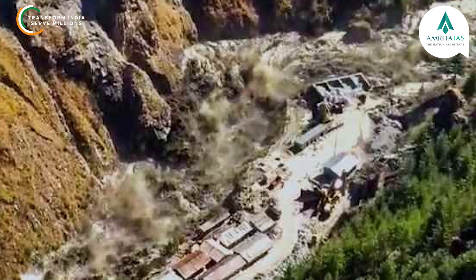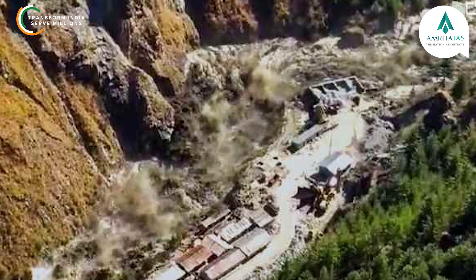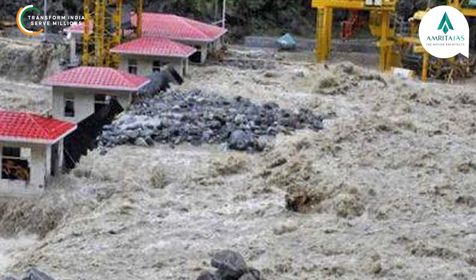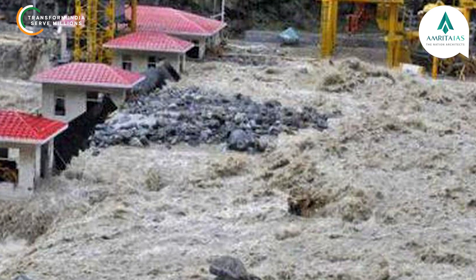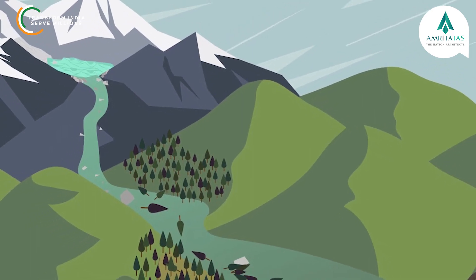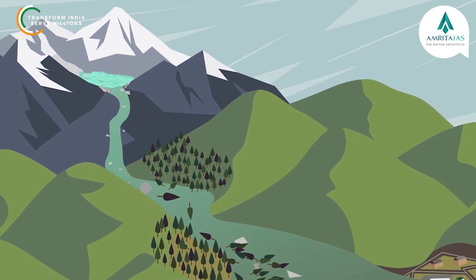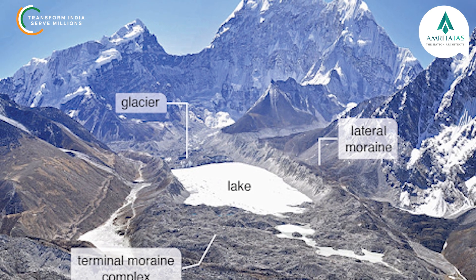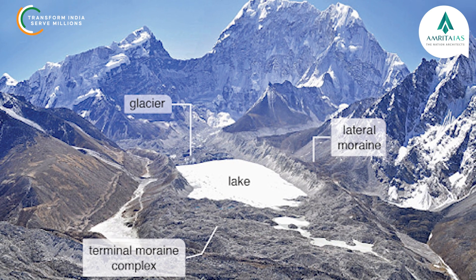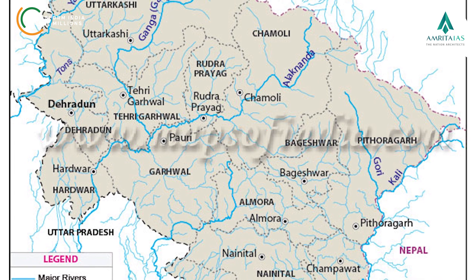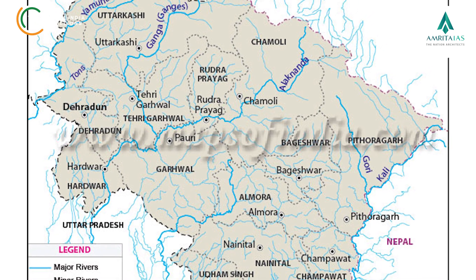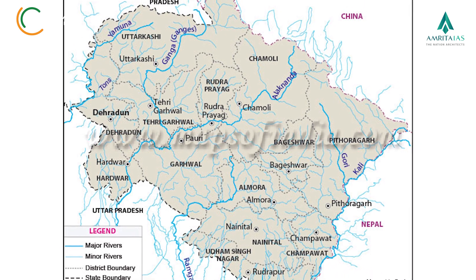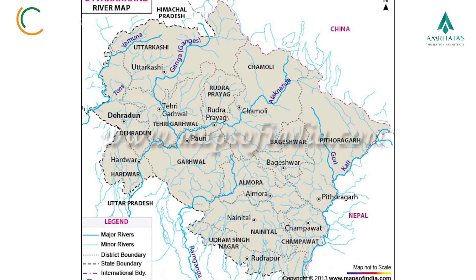The 2021 Uttarakhand flood began on 7 February 2021 in the environs of the Nanda Devi National Park, a UNESCO World Heritage Site in the outer Garhwal Himalayas in the Uttarakhand state. It is believed to have been caused by a landslide, an avalanche, or a glacial lake outburst flood. It caused flooding in the Chamoli district, most notably in the Rishiganga river, the Dhauli Ganga river, and in turn the Alaknanda, which is the major headstream of the Ganges.